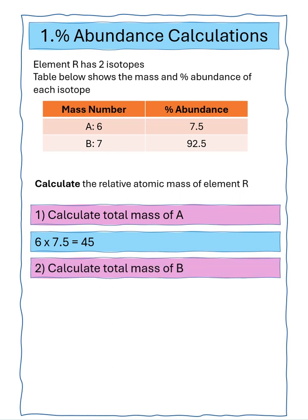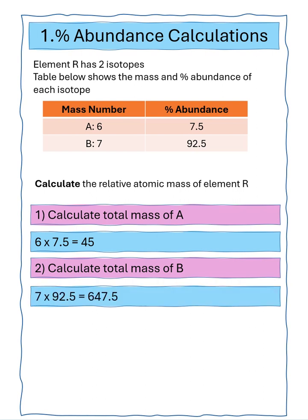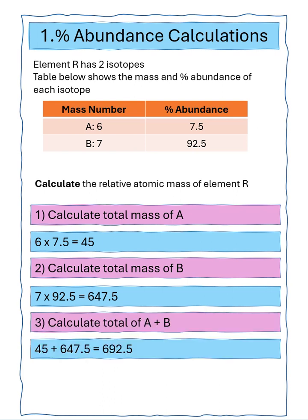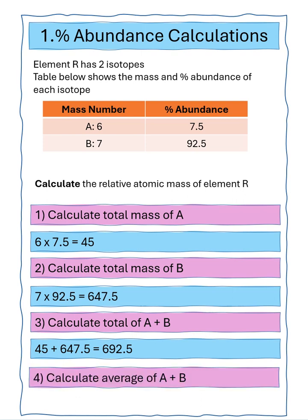We then calculate the total mass of B: mass number 7 times abundance 92.5, giving us a total of 647.5. We then simply add those two numbers up to give us a total of 692.5. Because the abundance is 100%, we calculate the average of A and B by dividing the total by 100, which gives us 6.93 as an average mass number for the two isotopes.